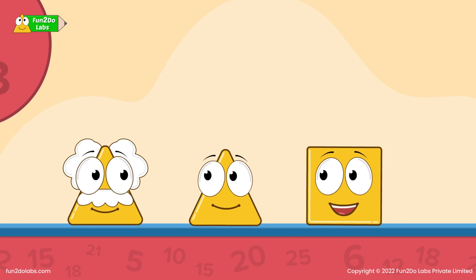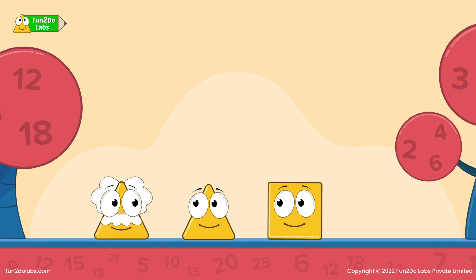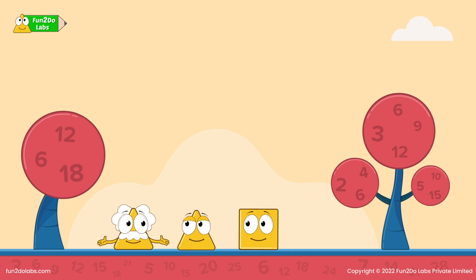This land looks so weird. Why are so many numbers all around? This is Planet Multiple. Everything works in terms of multiples here. Multiples? What do you mean?